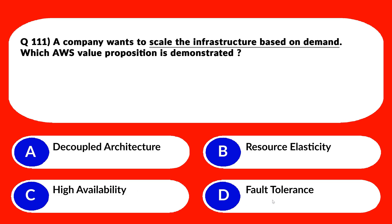We'll look at option C and D. C says high ability, D says fault tolerance. High ability and fault tolerance are associated with disaster recovery — that is, if the entire infrastructure is down, how quickly we can make it operational once again. We do not require these as per the question, so C and D are out.